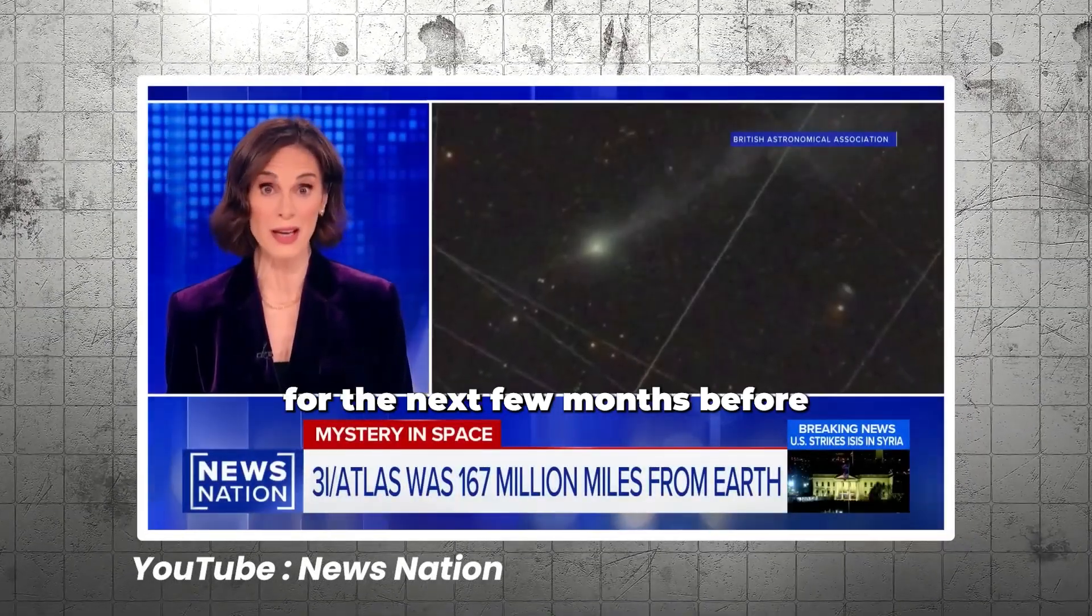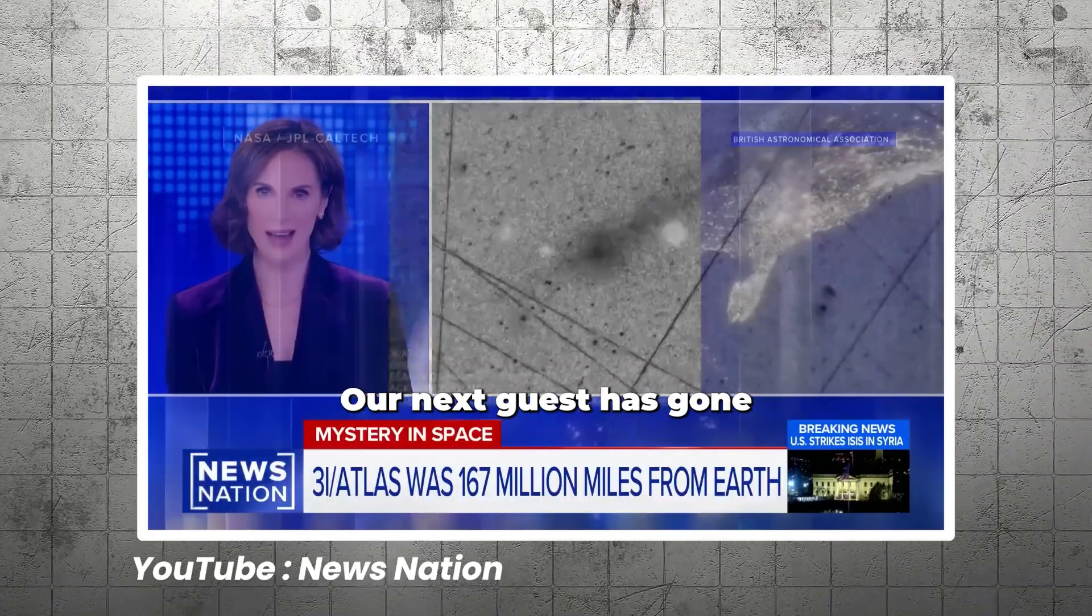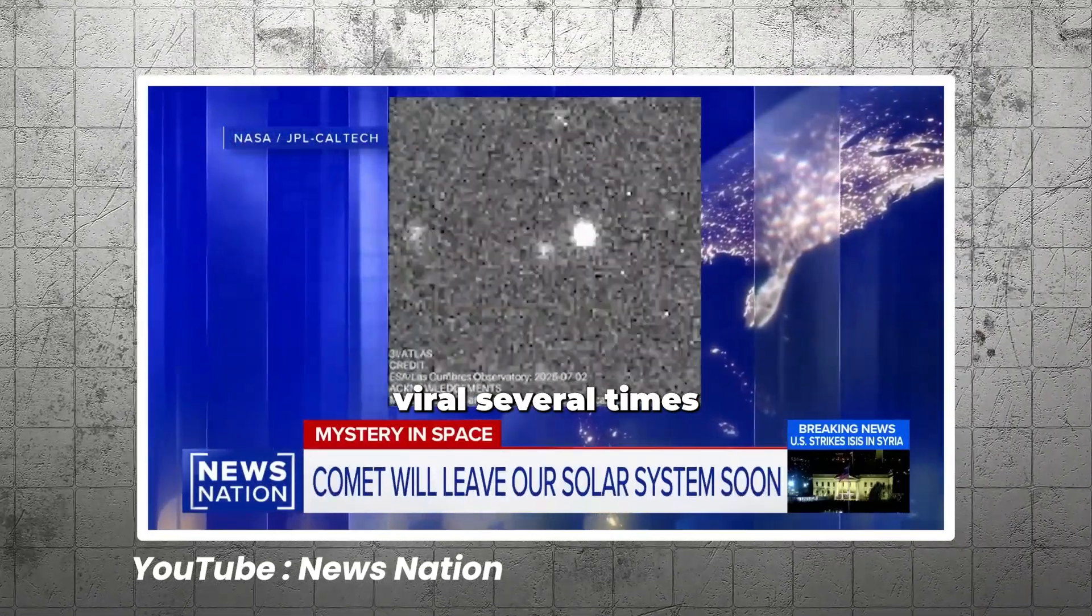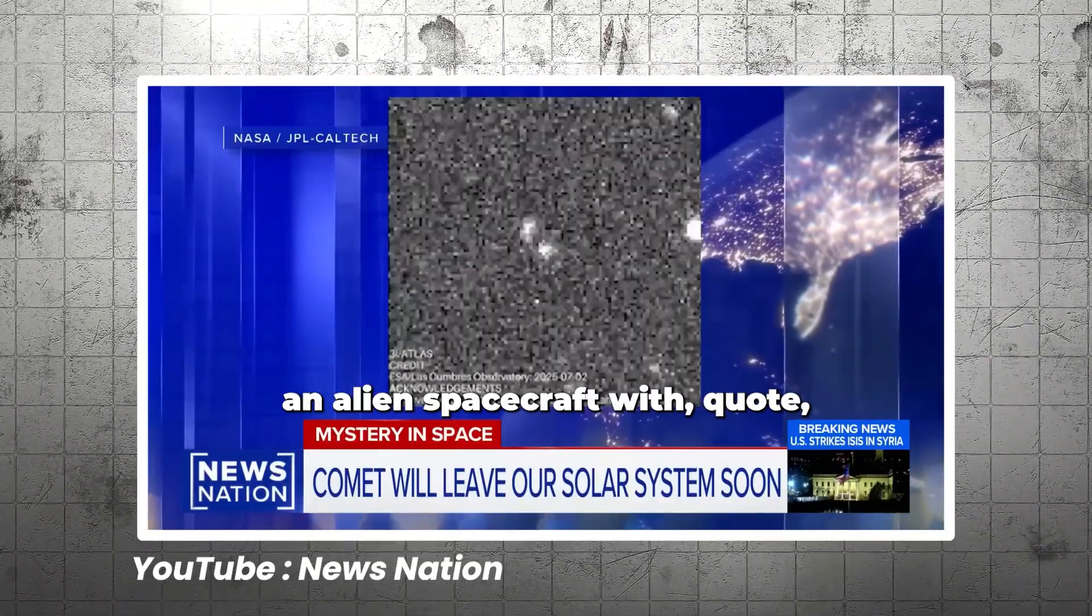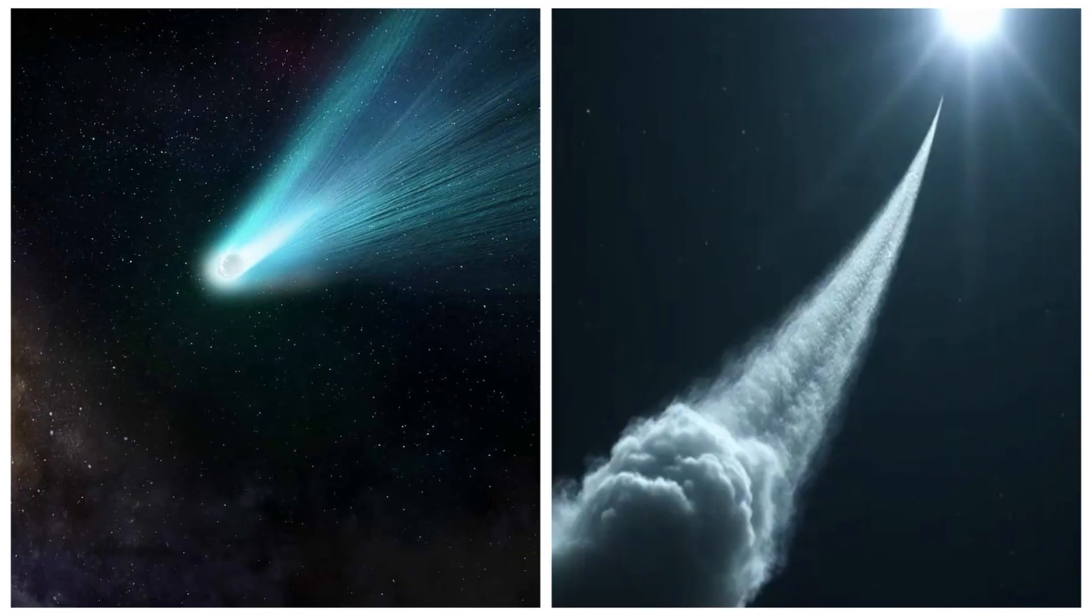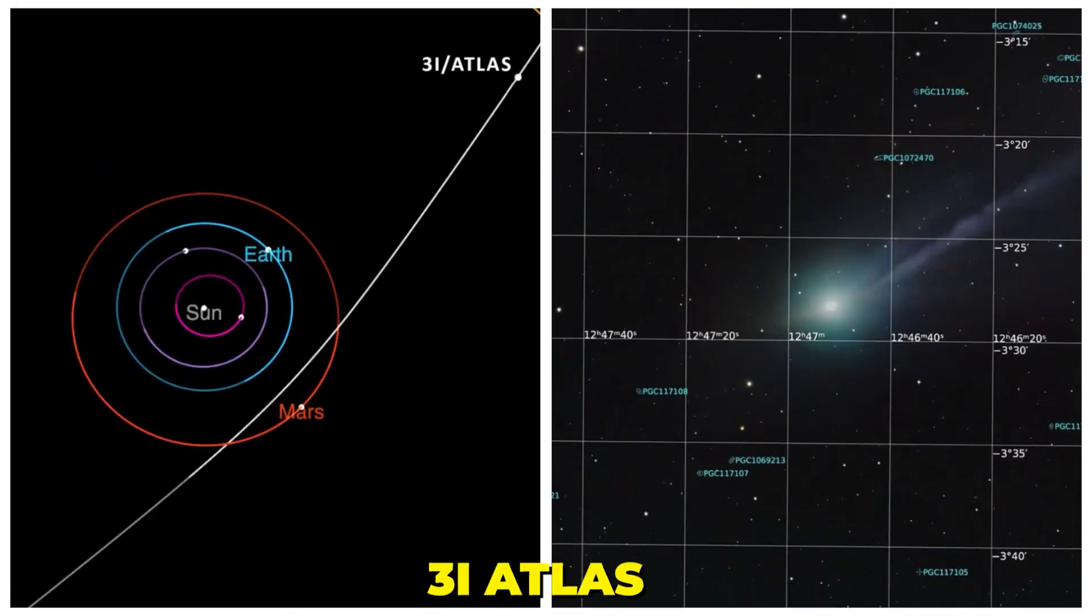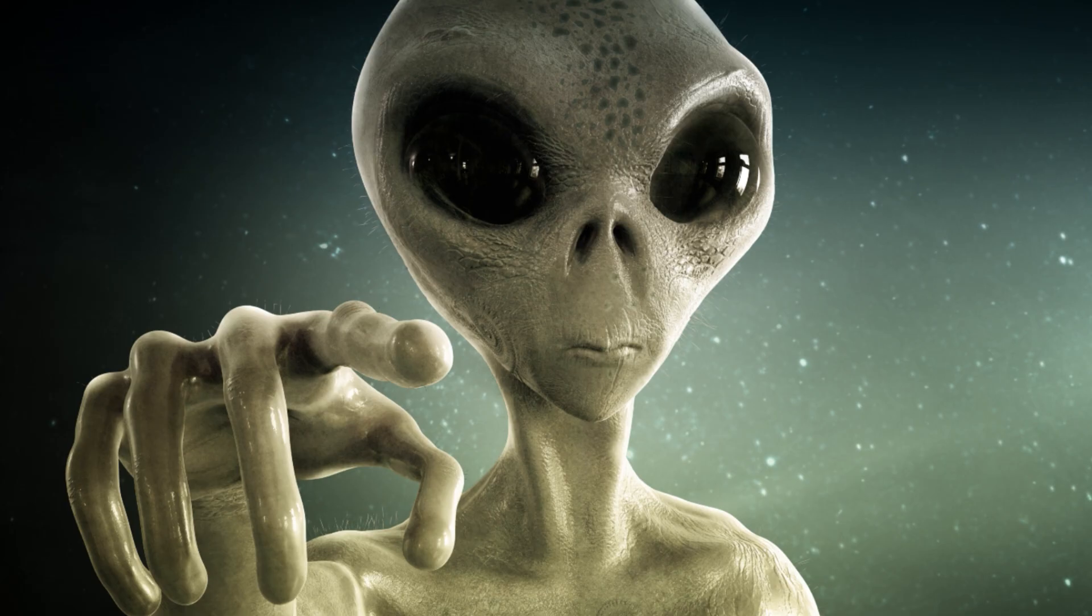3I Atlas will be visible for the next few months before it leaves our solar system forever. Our next guest has gone viral several times for his hypothesis that the comet could actually be an alien spacecraft with hostile intentions. Harvard astrophysicist Avi Loeb has spent the past six months documenting every weird thing about 3I Atlas and publishing paper after paper suggesting this might be alien technology.